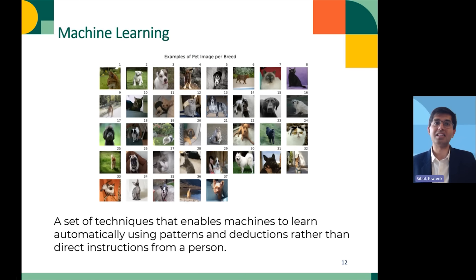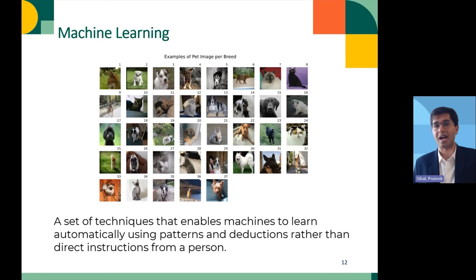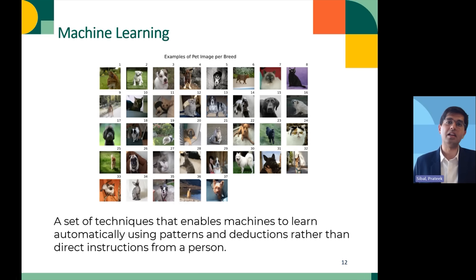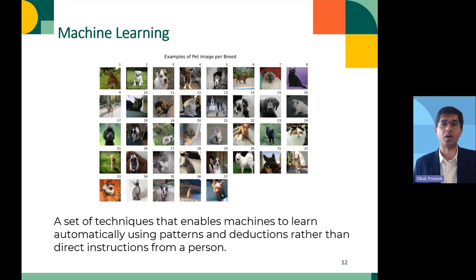Another example is machine learning, which is a set of techniques that enables machines to learn automatically using patterns and deductions derived from data. If you want to develop an AI system that can detect whether a given image is a dog or a cat, you train it with a lot of labeled images of dogs and cats. The AI then learns the characteristics which differentiate each and will be able to identify whether it's a dog or a cat.